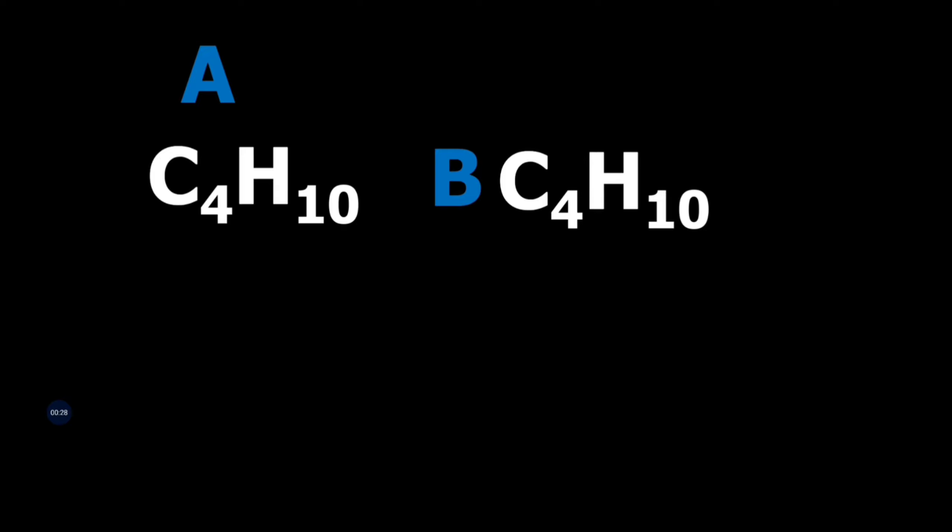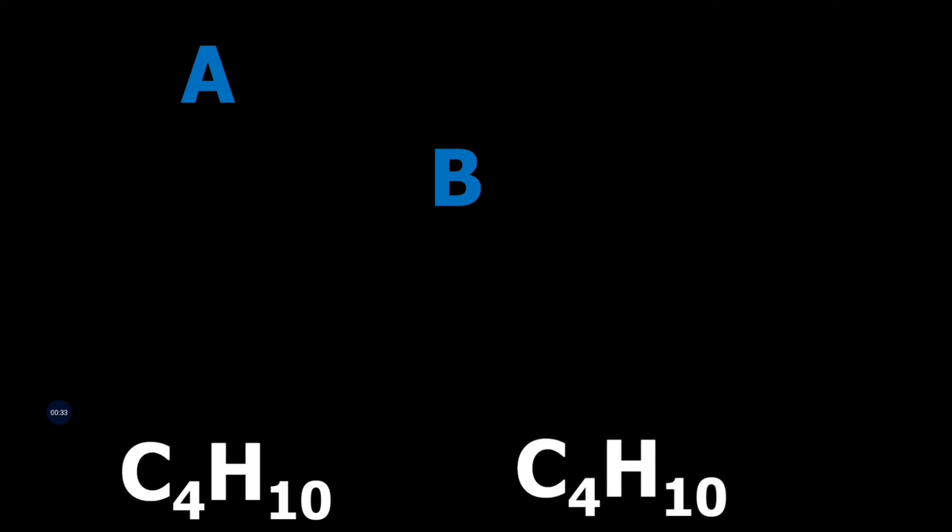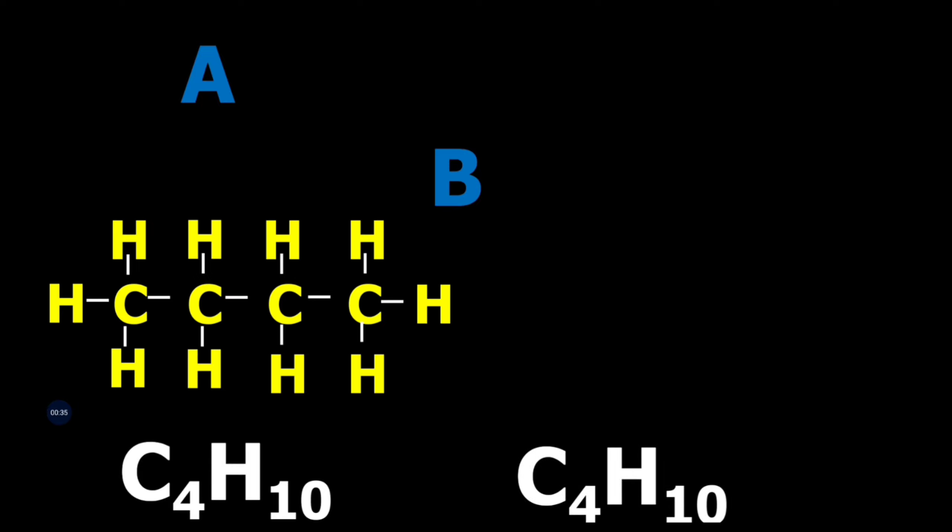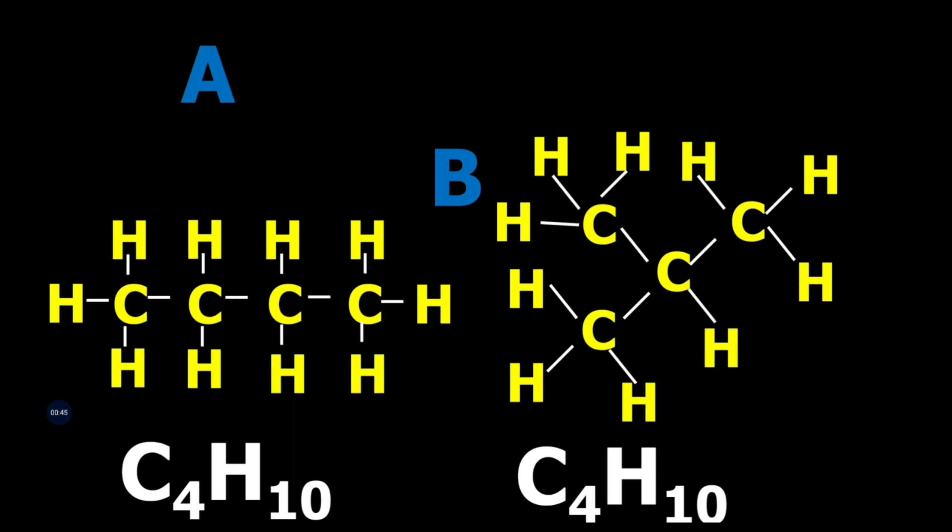What are the possible structures that can be drawn from these formulas? Well, for A, we can draw a linear molecule with 4 carbons and 10 hydrogens. For B, we can draw a branched molecule.